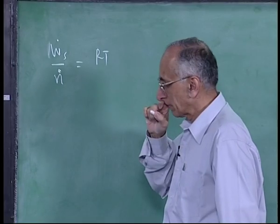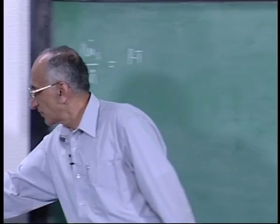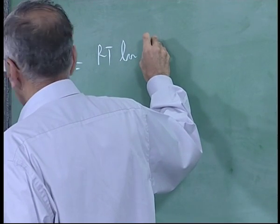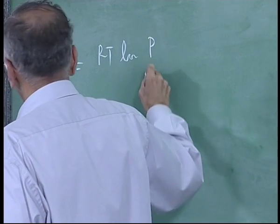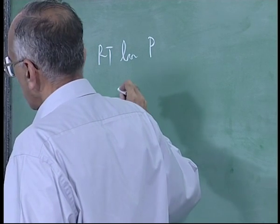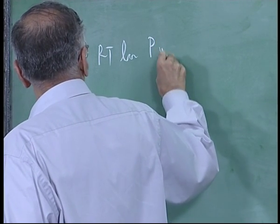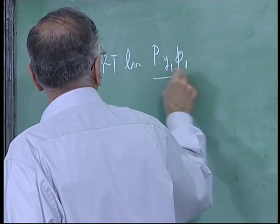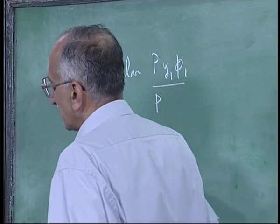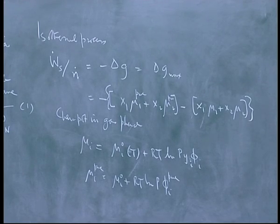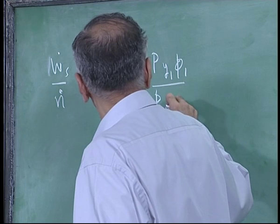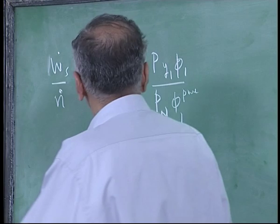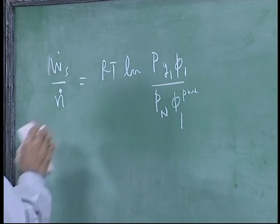So if you use millimeters here, you will be off by a large number. You have to be careful. So this difference therefore delta G mix or Ws dot by M dot by N dot is equal to RT into the difference between these two. You must have another x1 in front.